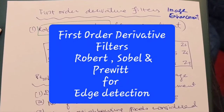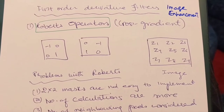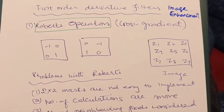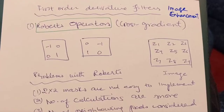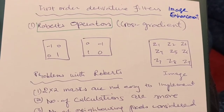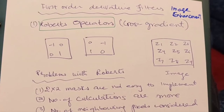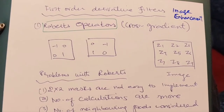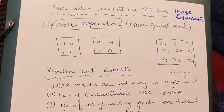In our previous video we studied about a second-order derivative filter which was a high boost filter used for image enhancement. Now we are going to study about some first-order derivative filters which are used for image enhancement. These filters are also very simple, just like the high boost filter.